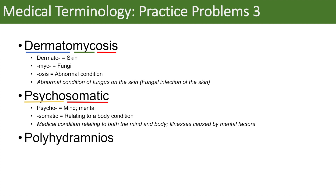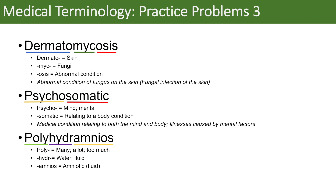The next word is polyhydramnios. Poly means many, a lot, or too much. Hydra or hydro means water or fluid. And amnios — you can think of amniotic, referring to the amnion or amniotic sac. When we put this all together, polyhydramnios means an abnormal condition of too much amniotic fluid, meaning there's too much amniotic fluid in the amniotic sac.